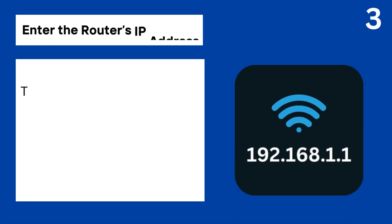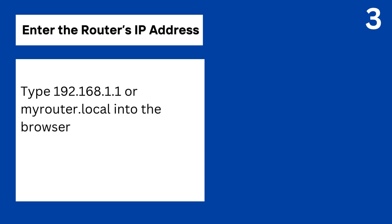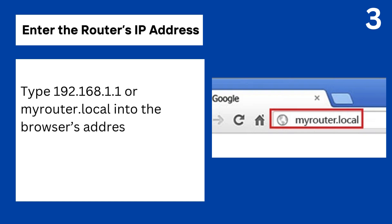Step 3: Enter the router's IP address. Type 192.168.1.1 or myrouter.local into the browser's address bar, then press Enter.